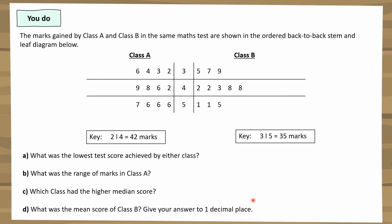The answers: part a — Class A's lowest score was 32 and Class B's was 35, so the lowest overall was 32. Part b — the range in Class A: the highest was 57, the lowest was 32, so 57 minus 32 equals 25 marks.